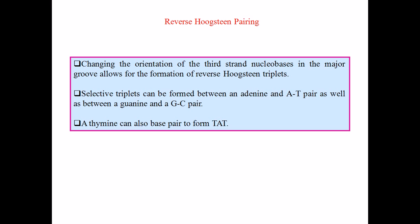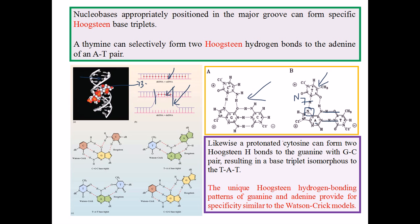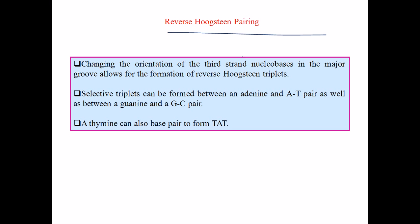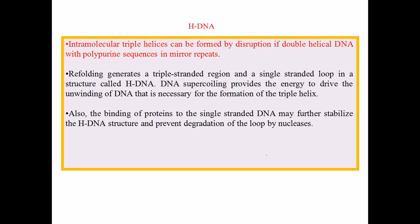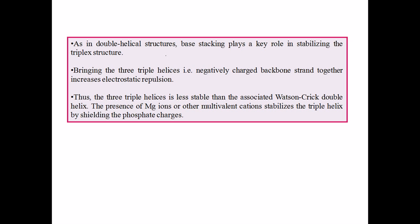Triplex structures are also important because of another type of Hoogsteen pairing called reverse Hoogsteen pairing. In regular Hoogsteen pairing, one strand runs 5' to 3' and the other antiparallel 3' to 5'. In reverse Hoogsteen pairing, we invert the bases, and they can still form bonds with each other. These bonds are called inverse Hoogsteen base pairs, forming a TAT triplet.